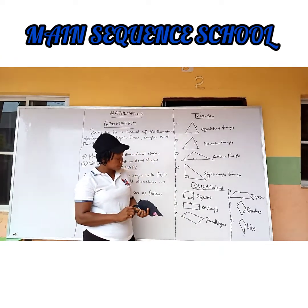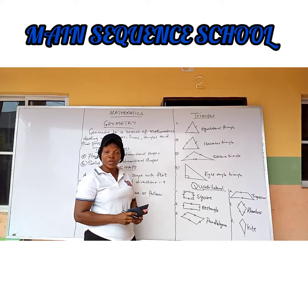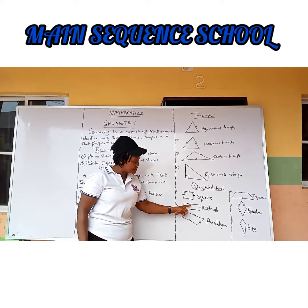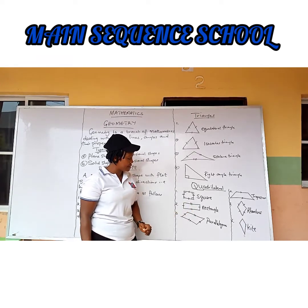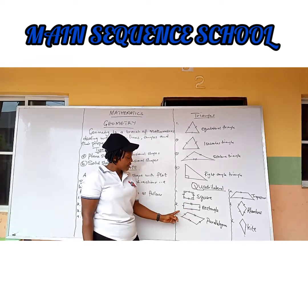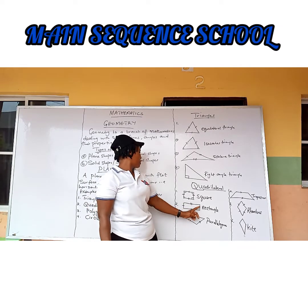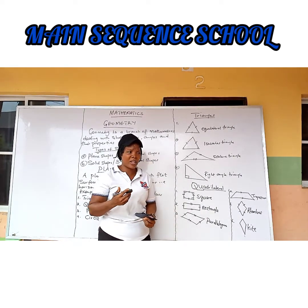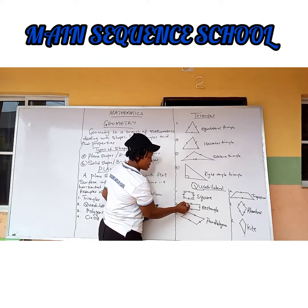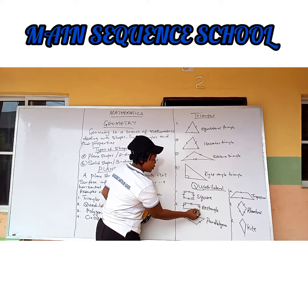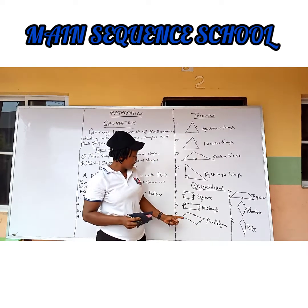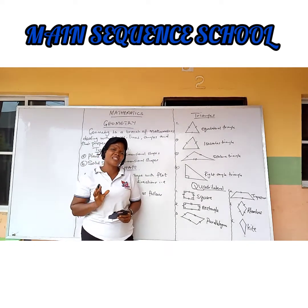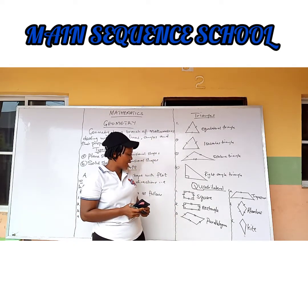Let's move to a rectangle. A rectangle is also a quadrilateral shape with four sides, but two opposite sides are equal and parallel. So a rectangle also has two pairs of parallel sides, and each of its angles is 90 degrees. Next is a parallelogram, which also has two pairs of parallel sides, but the angles are not all equal.